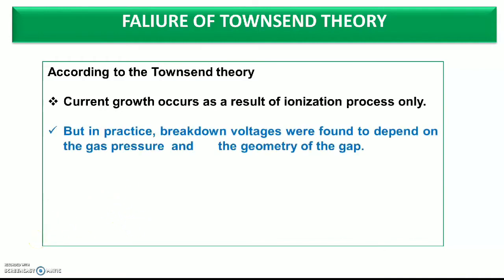But actually, the real condition was something different. In practice, breakdown voltage was found to depend on the gas pressure and the geometry of the gap. Townsend's theory had not considered that gas pressure as well as the geometrical shape of the gap also affect the breakdown voltage. The current growth depends on gas pressure, and this was an entirely additional process which Townsend's theory failed to account for. Finally, it was addressed by streamer theory.